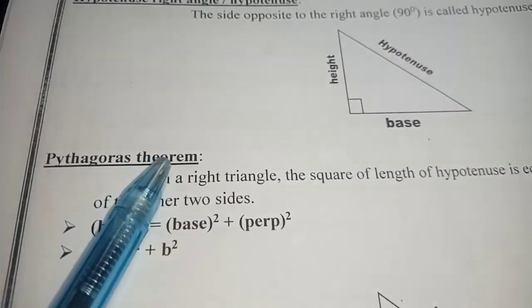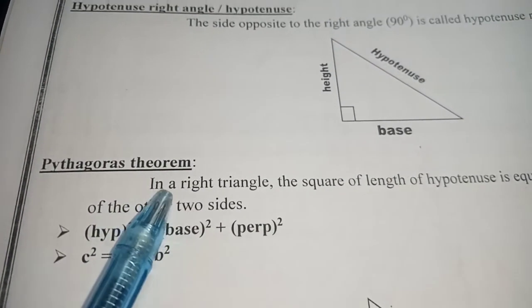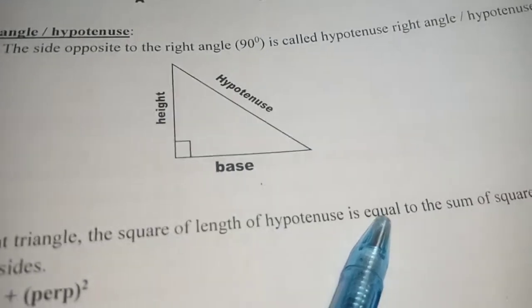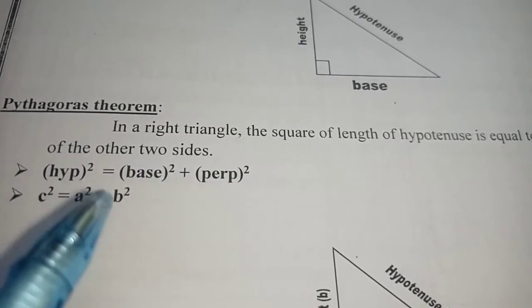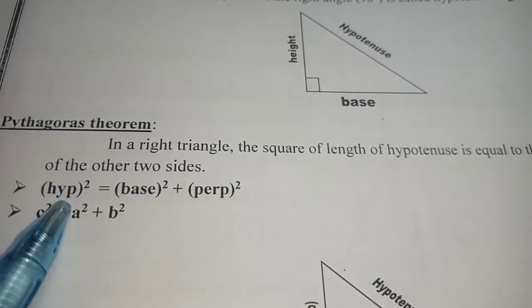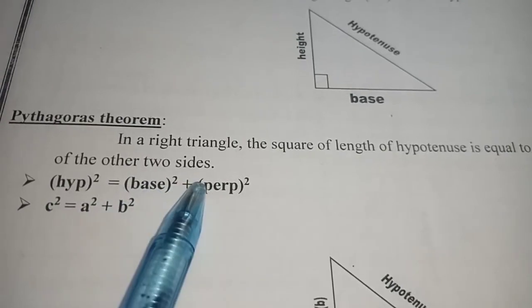Now, what is Pythagoras theorem? In a right triangle, the square of the length of the hypotenuse is equal to the sum of the squares of the lengths of the base and perpendicular. This is the mathematical form of Pythagoras theorem, which states: hypotenuse² = base² + perpendicular².